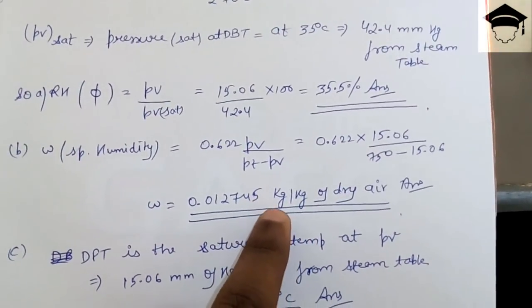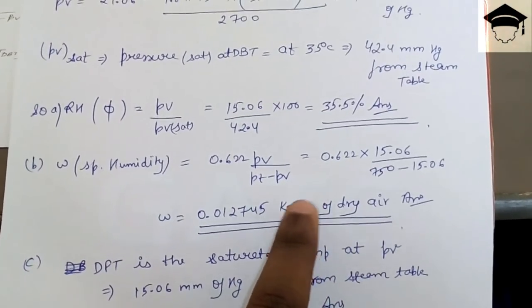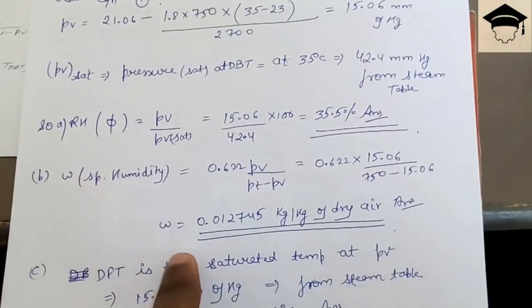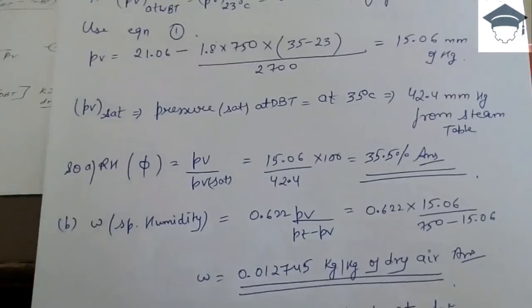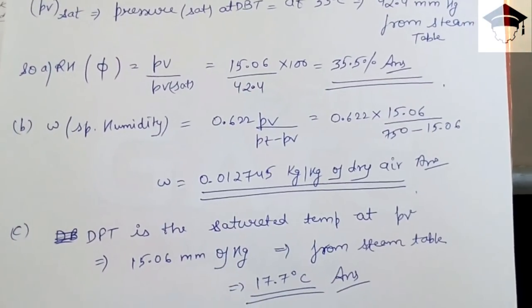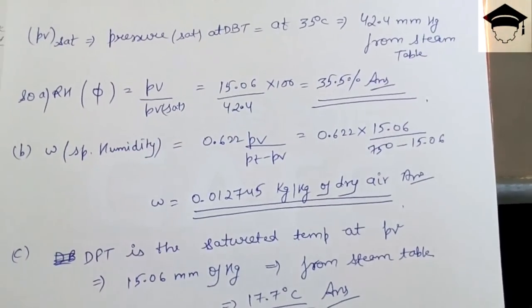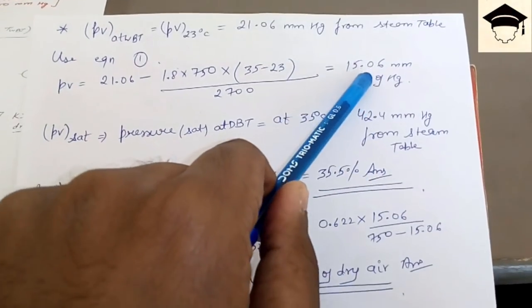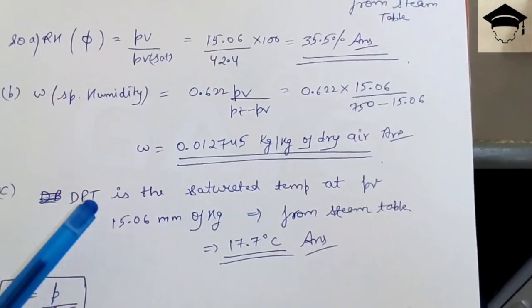For dew point temperature: it is the saturation temperature corresponding to the partial pressure. Since pv = 15.06 mmHg, go to the steam table and find the saturation temperature at this pressure. The corresponding dew point temperature is 17.7°C.